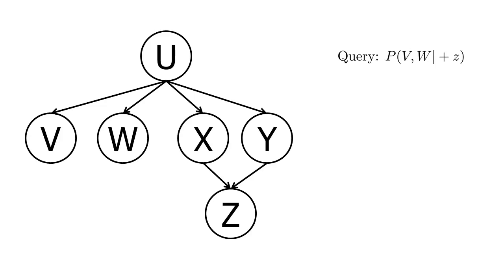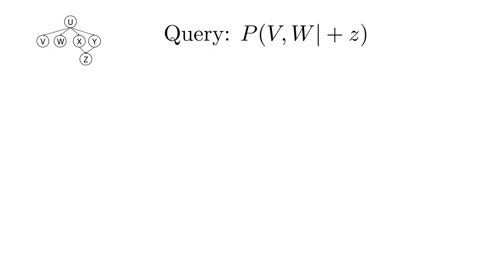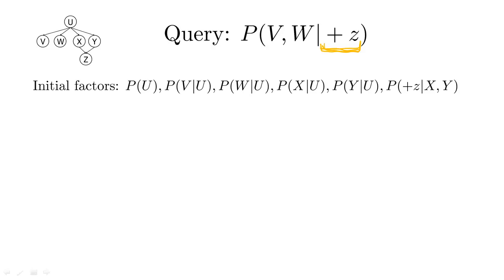We're given the same Bayesian network with six variables. Now our query is to find the conditional distribution for V and W conditioned on plus Z. Our initial factors are all the conditional probability tables from the Bayesian network, instantiating the evidence variable Z to plus Z. That means our initial factors are: the marginal for U, the conditional for V given U, W given U, X given U, Y given U, and plus Z given X and Y.